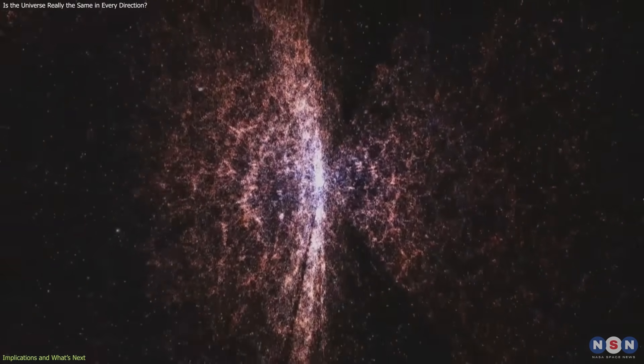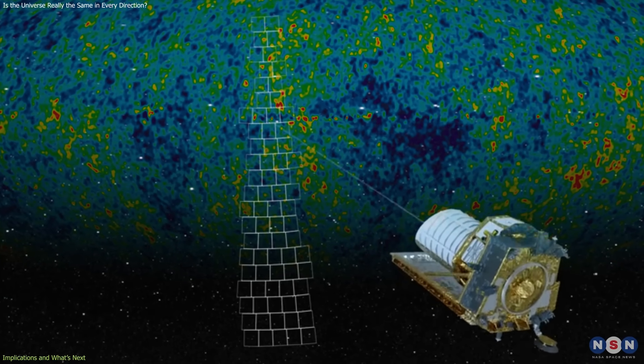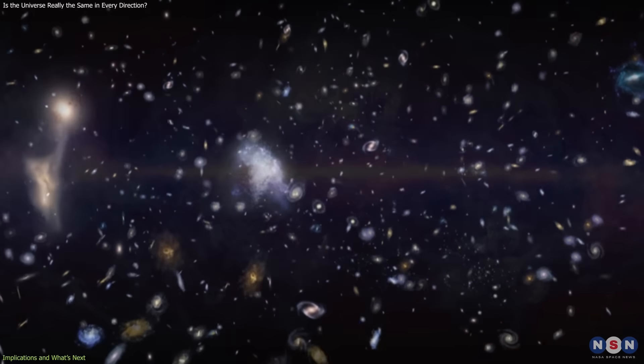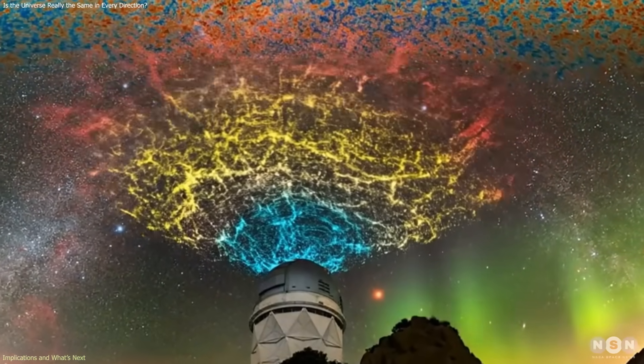These surveys will allow cosmologists to test large-scale isotropy more rigorously than ever before. If the anomaly persists across these new datasets, it will be increasingly difficult to attribute it to observational limitations. If it weakens or disappears, that outcome will also offer important insight into the limitations of current surveys.